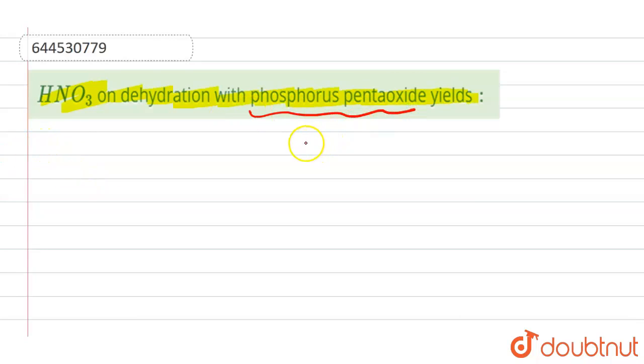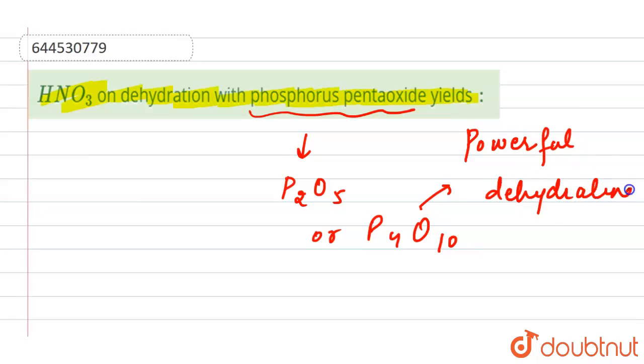This can also be written as P2O5 or P4O10. Mainly it is represented as P4O10 and it is a powerful dehydrating agent.